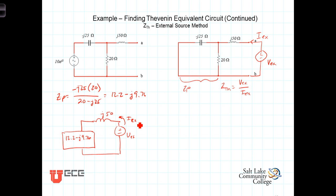We can now write an expression for IEX. The external current is just equal to the external voltage divided by the sum of those, which is J50 plus 12.2 minus J9.76.